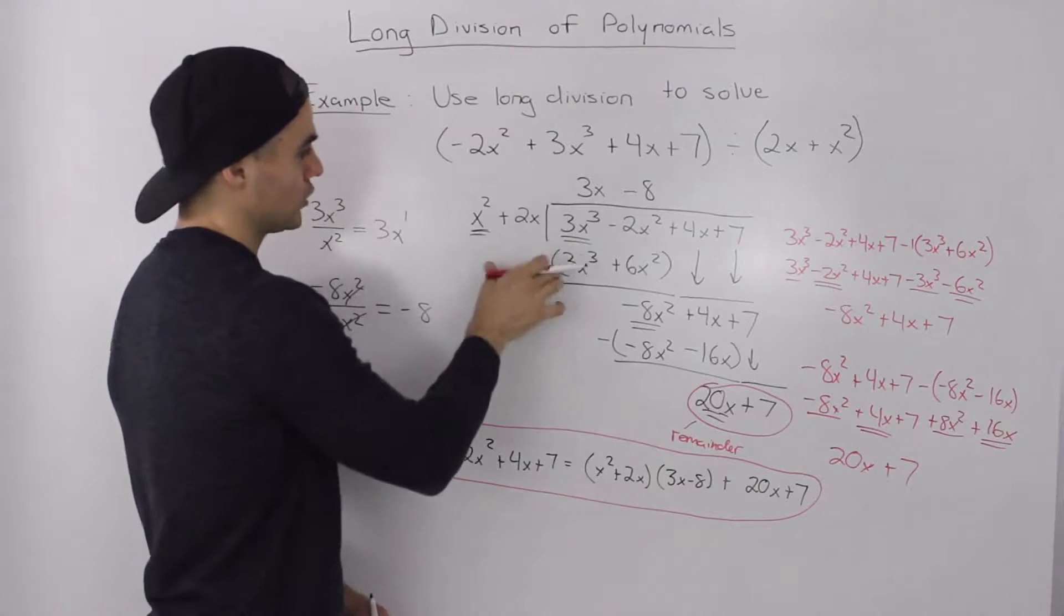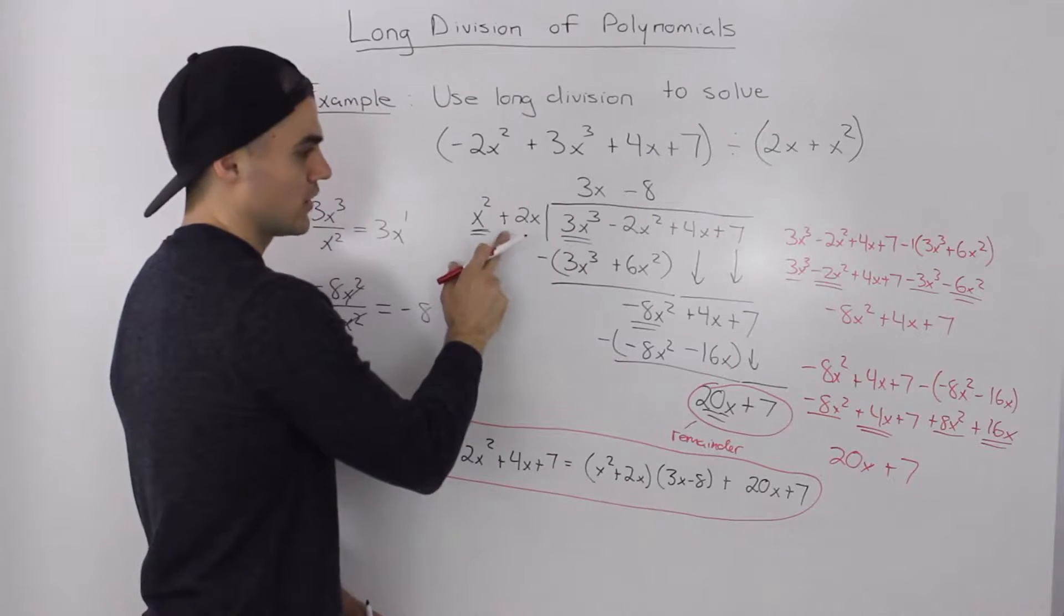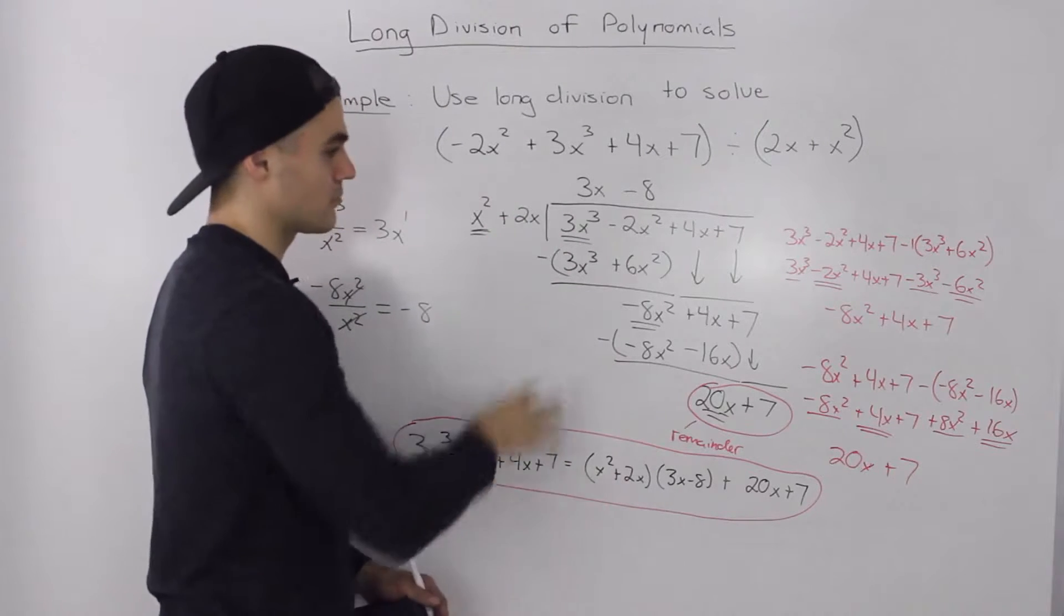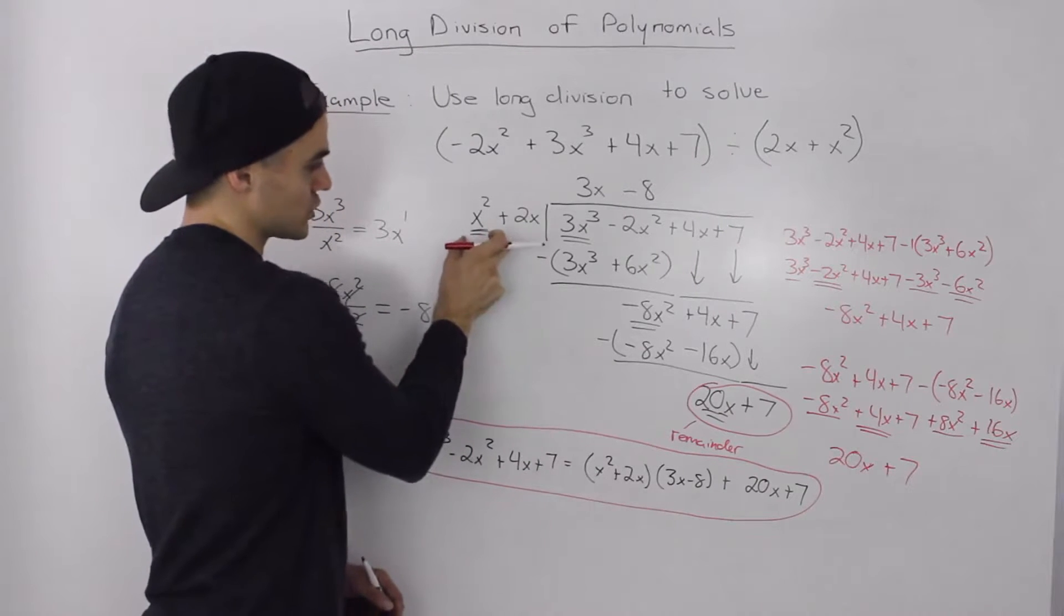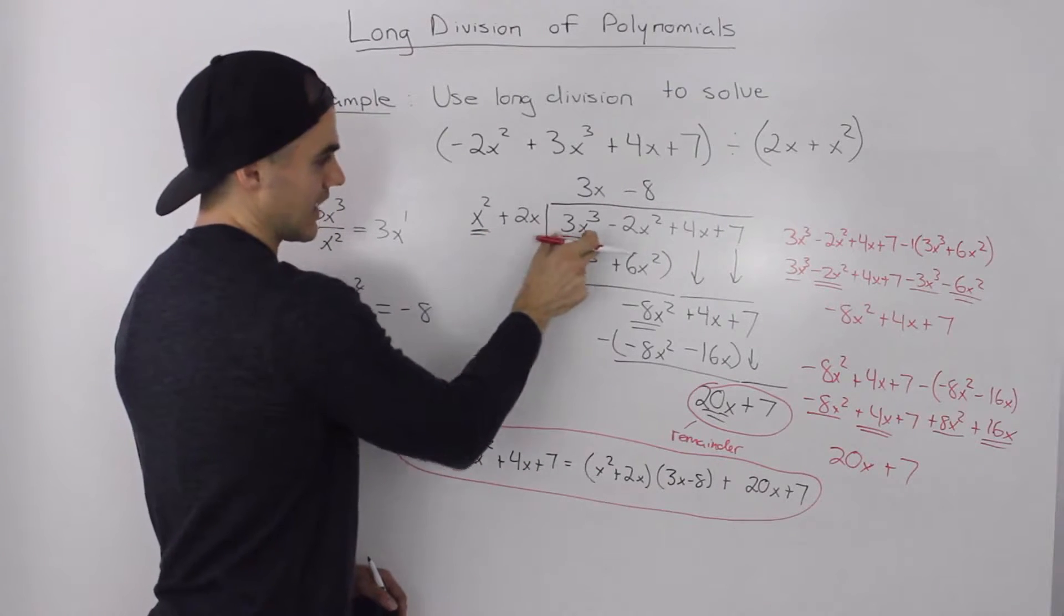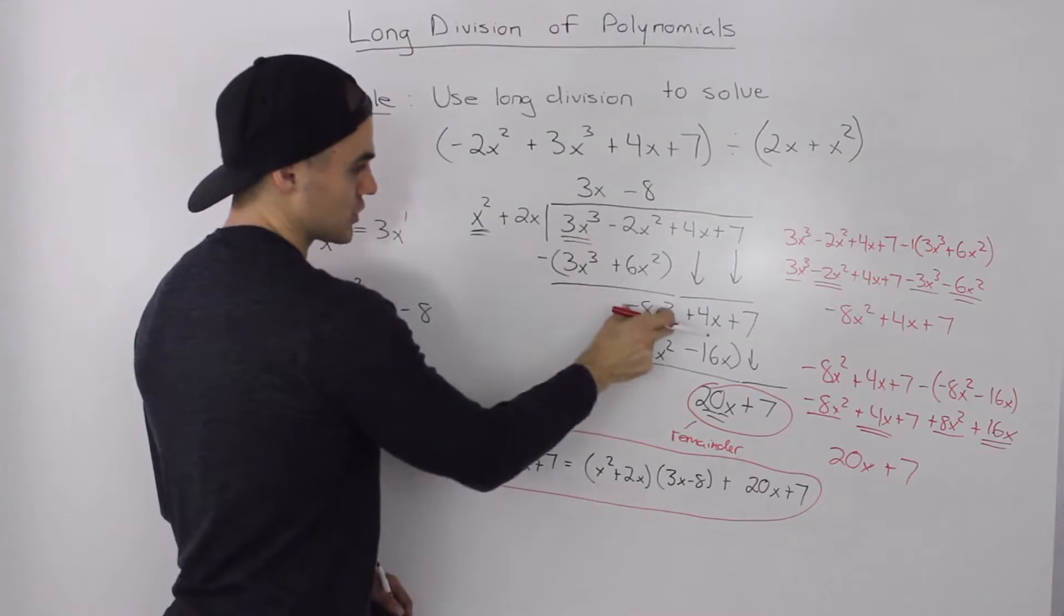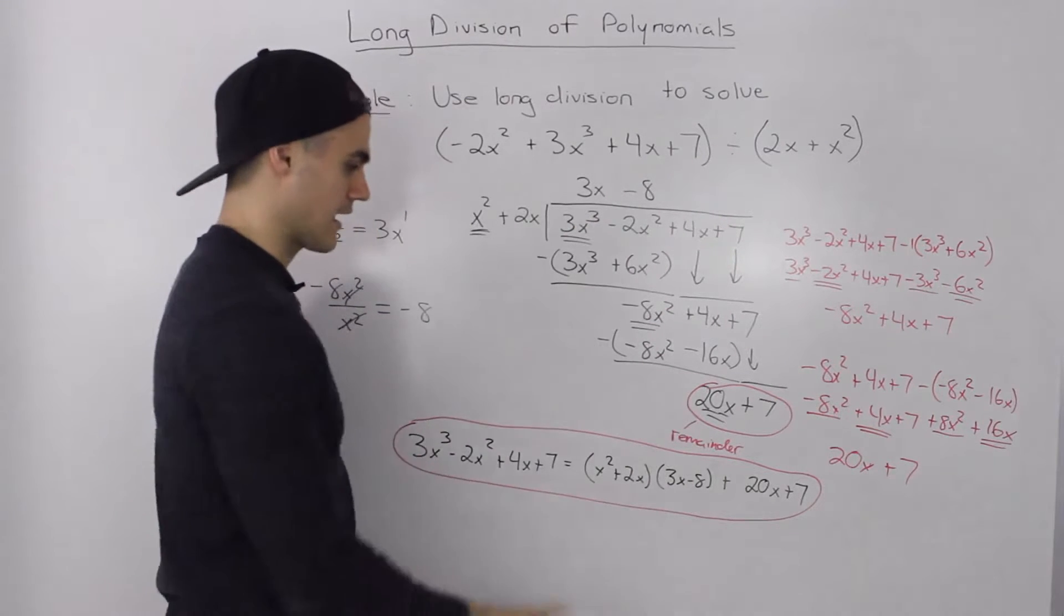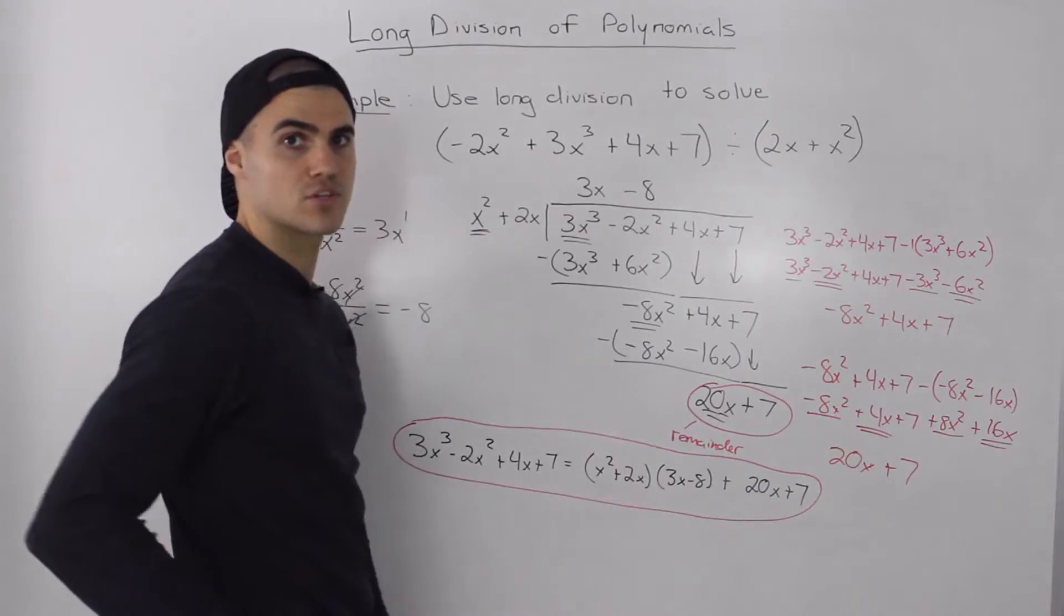But no matter what you're dividing by, whether it's the degree of 1, 2, 3, whatever, the process is exactly the same. You're always taking the first term of your divisor and seeing how many times it goes into the first term of your remaining dividends. And you end up getting the same type of result.